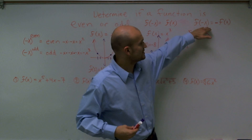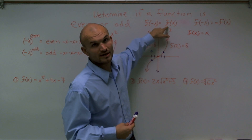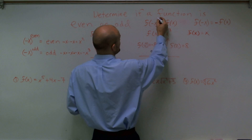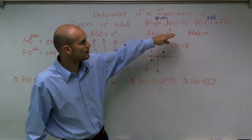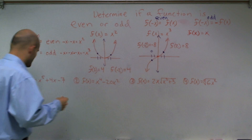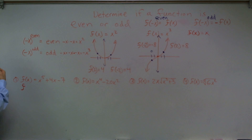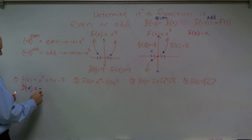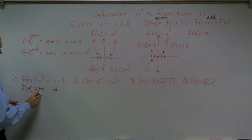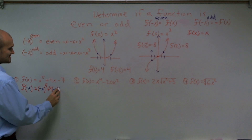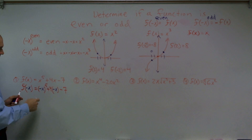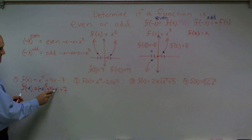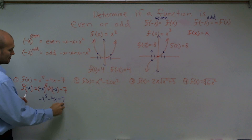There are two important rules: the definition for an even function and the definition for an odd function. To figure out if a function is even or odd, we plug in f of negative x. So I take f of negative x and plug it into each function. For example: negative x to the fifth plus 4 times negative x minus 7. Negative x sent to an odd power gives negative x to the fifth.